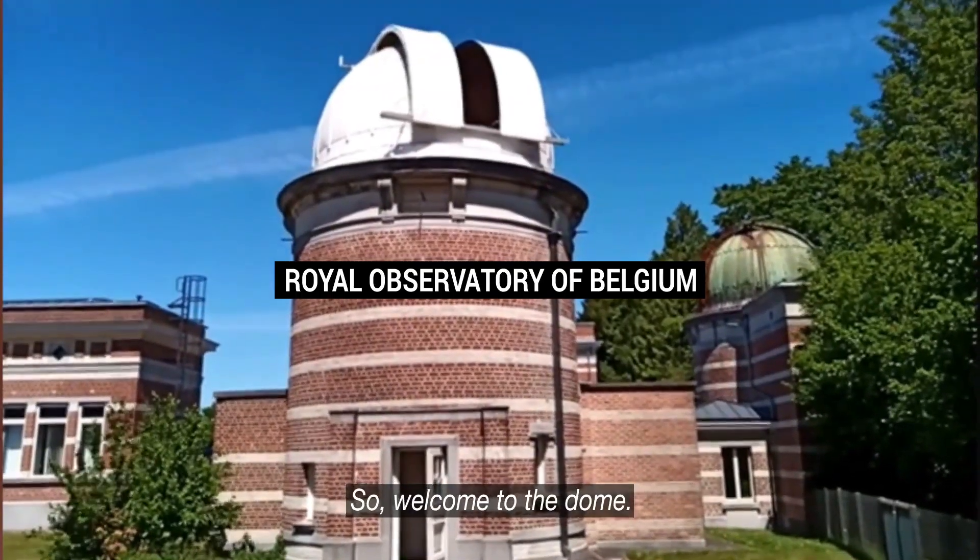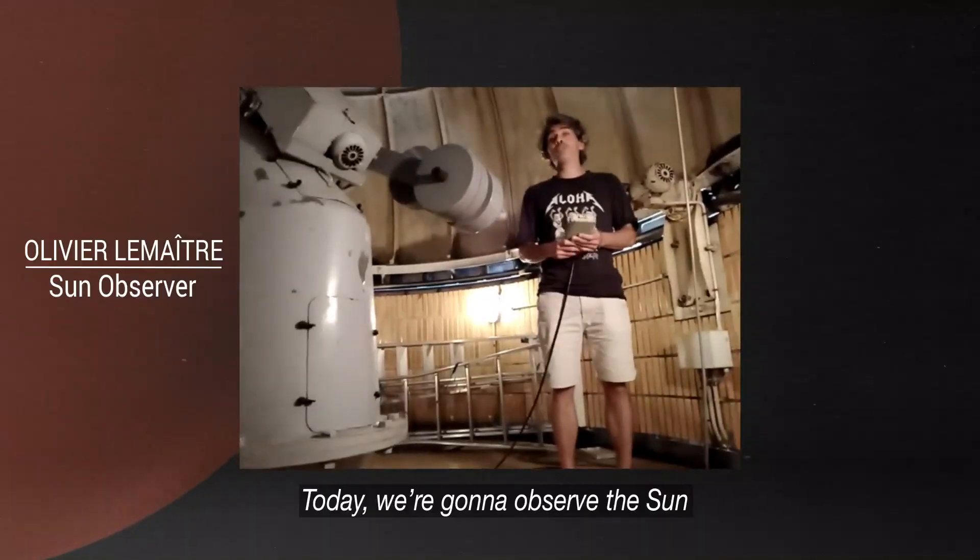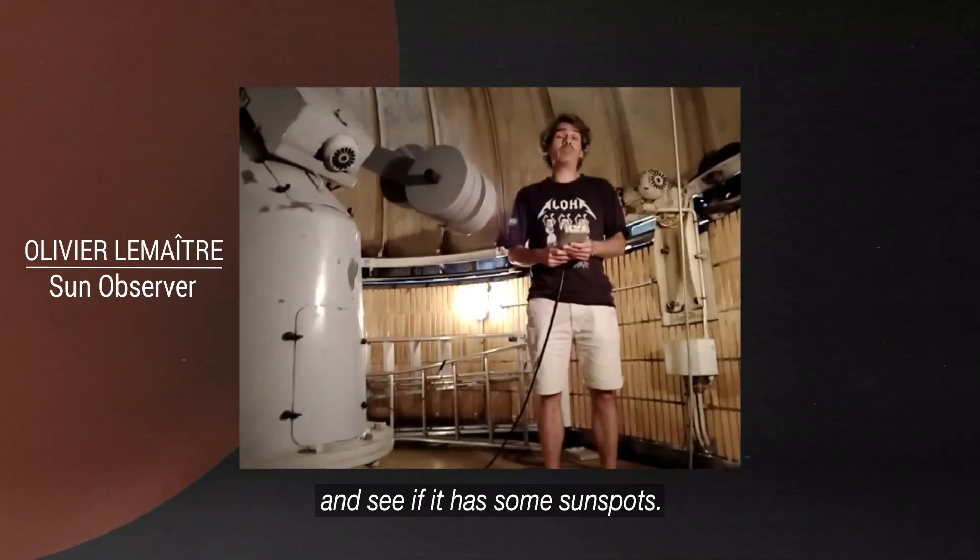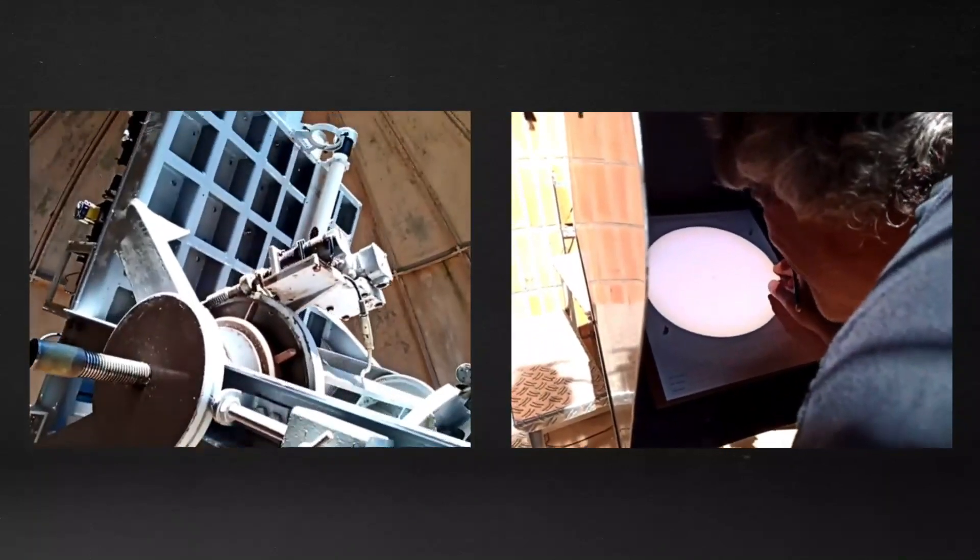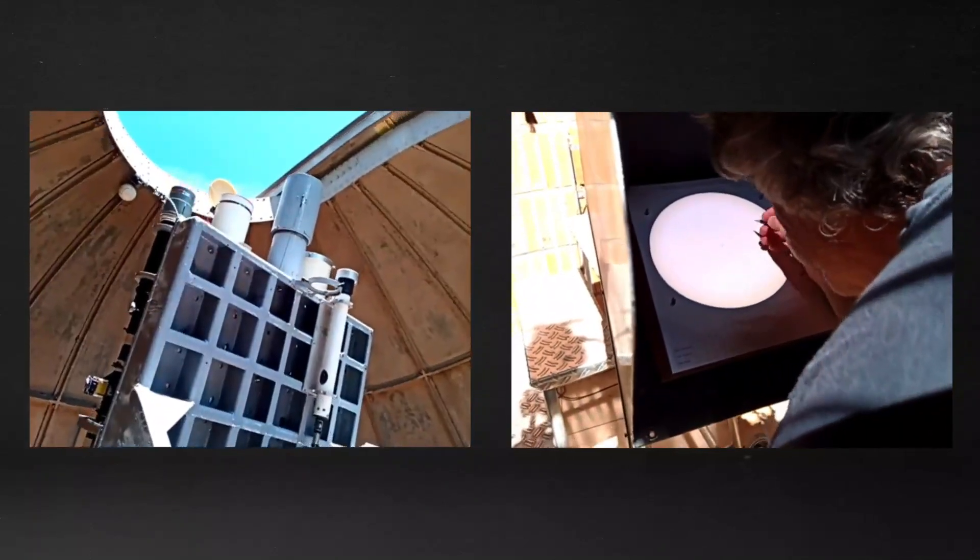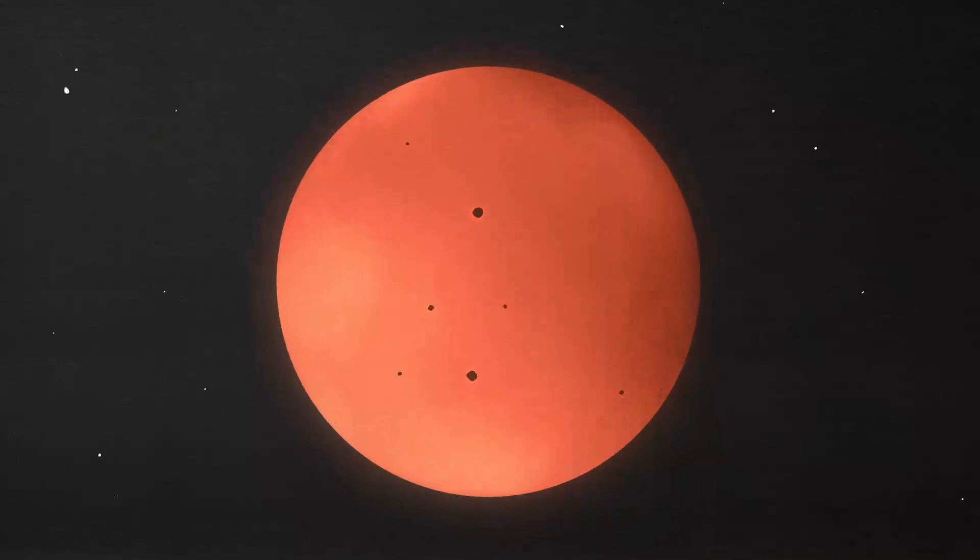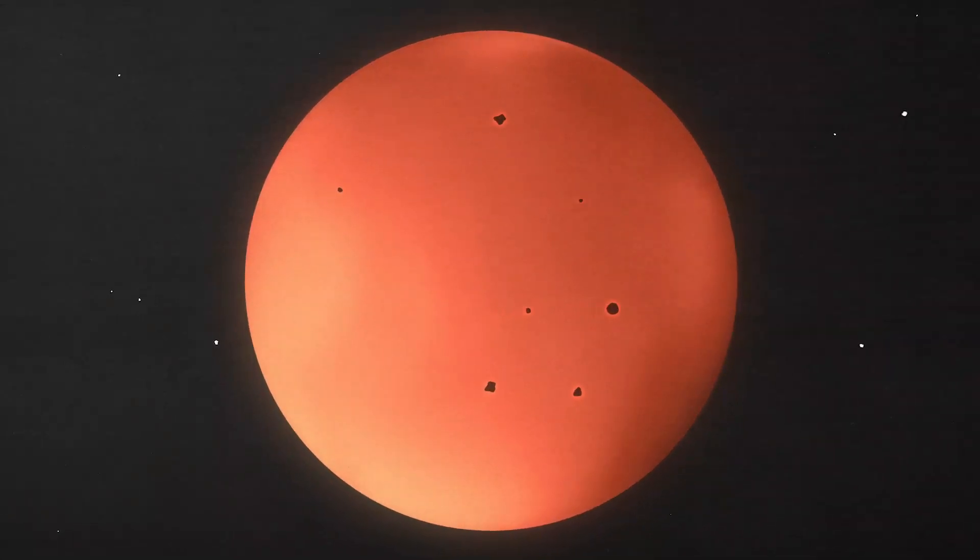So welcome to the dome. Today we're going to observe the sun and see if it has some sunspots. Every morning when the skies are clear, Olivier looks through this telescope in search of sunspots. These are dark blotches on the sun that are the main source of solar eruptions.